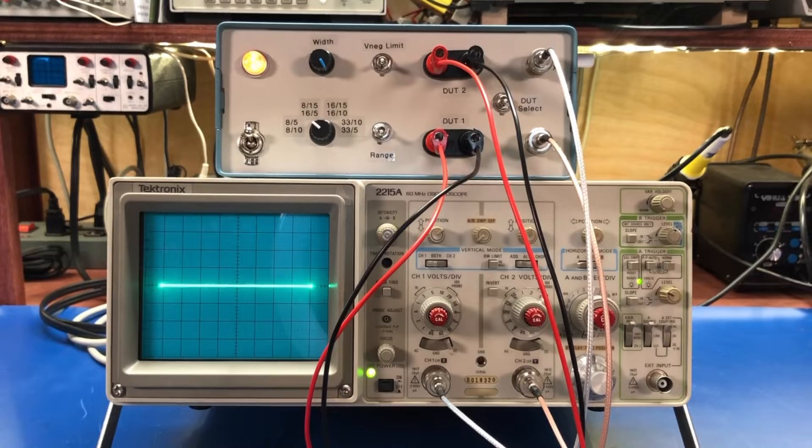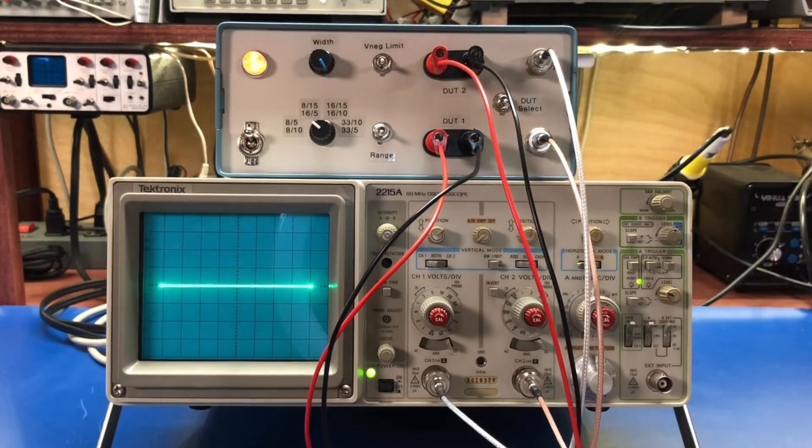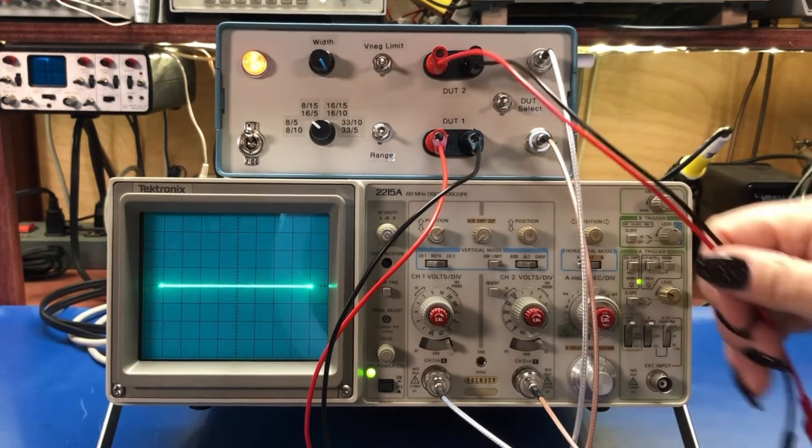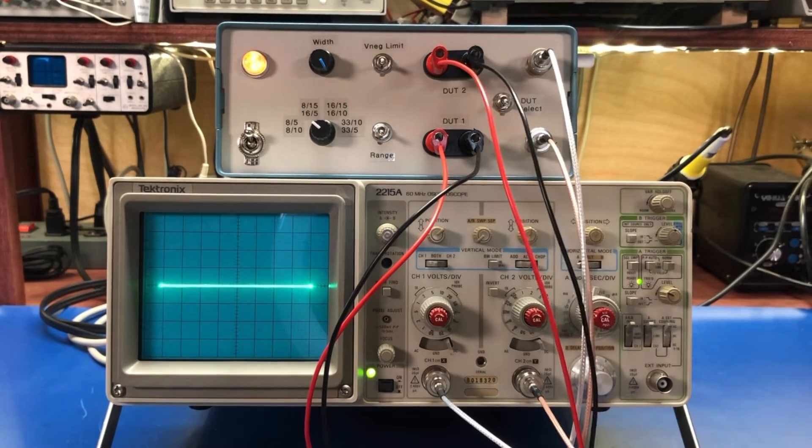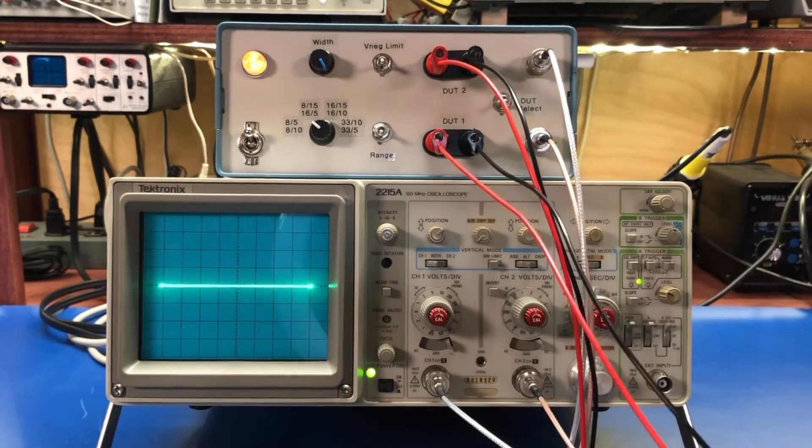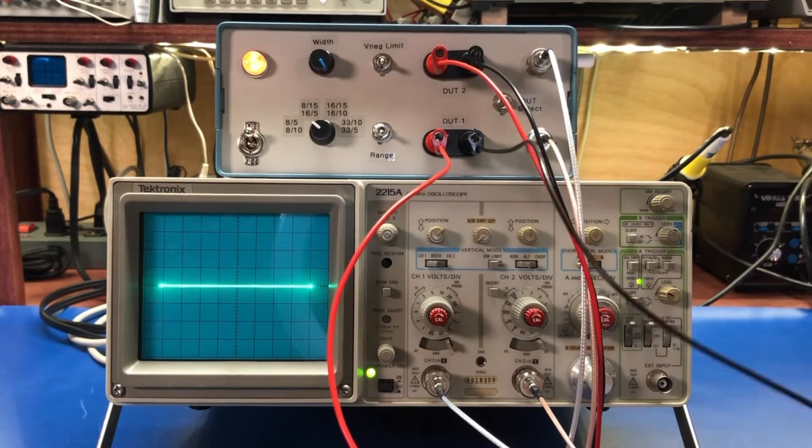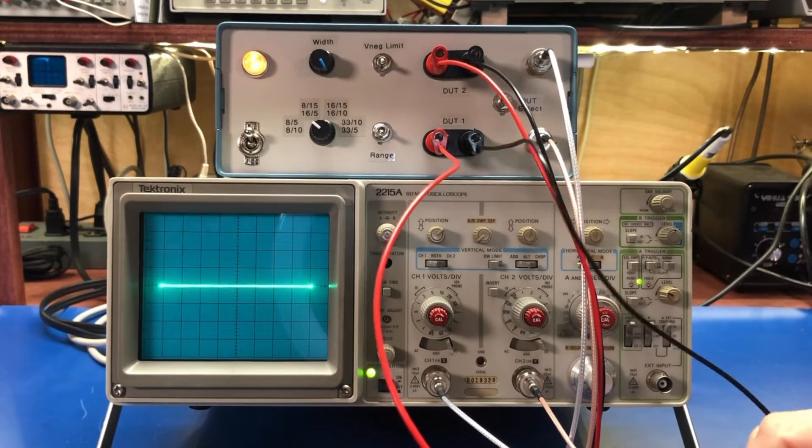This is the 8 volt 10 milliamp scale. Got some components here. I'm not going to do an in-depth explanation of stuff. I'll put a link to my video where I did a lot of talking about using a curve tracer and testing components. I just want to show you basically that this works.